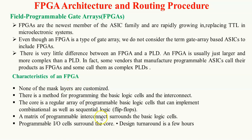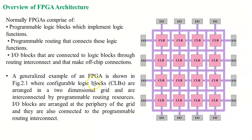In FPGA, it consists of three blocks. One block is called the programmable logic block, denoted as CLB. Another one is IO blocks — input and output blocks — which are connected to the outside of the corresponding structure. And we have the programmable routing, which is present across the corresponding logic functions.